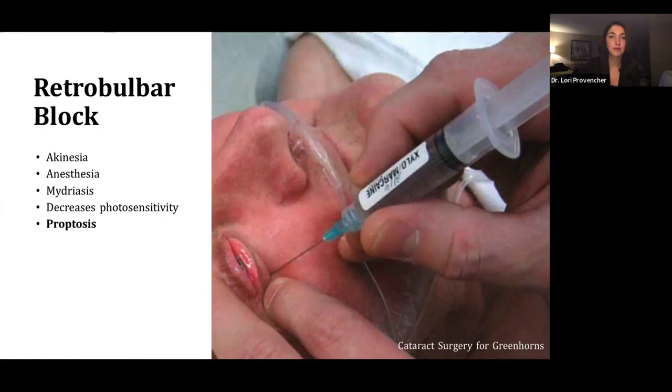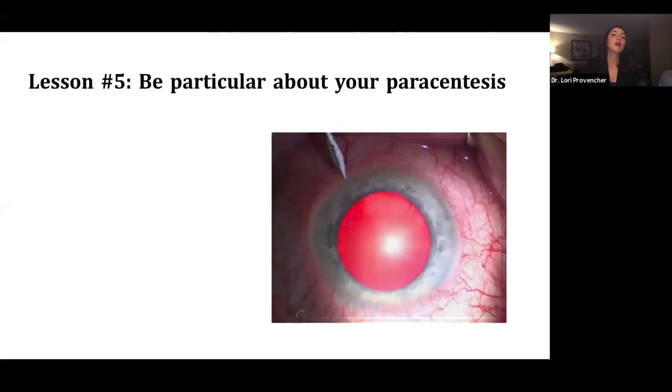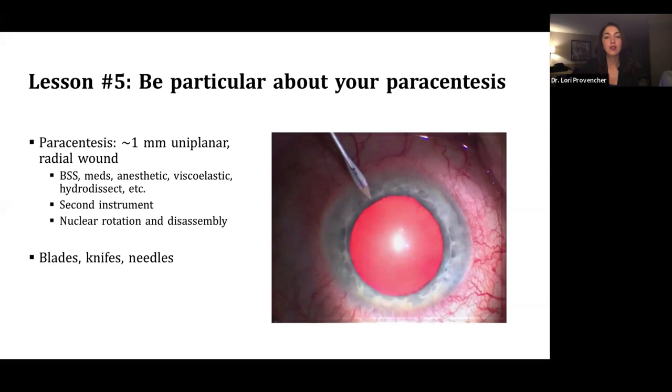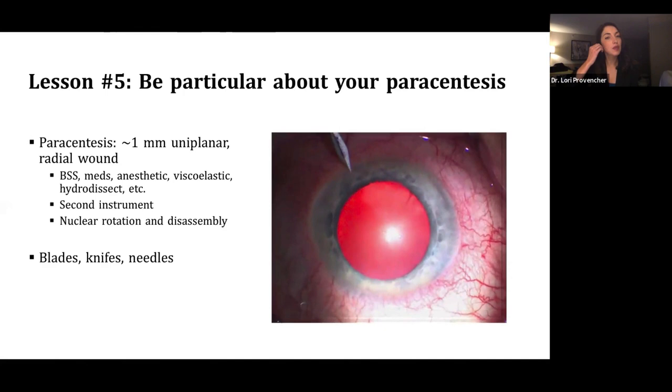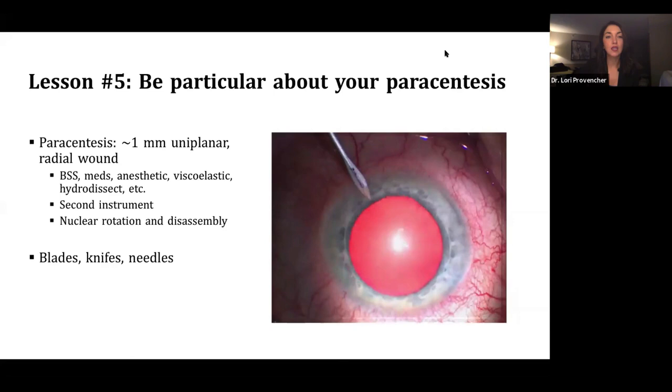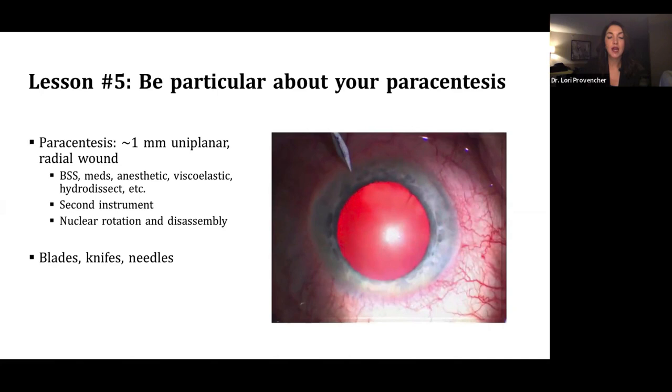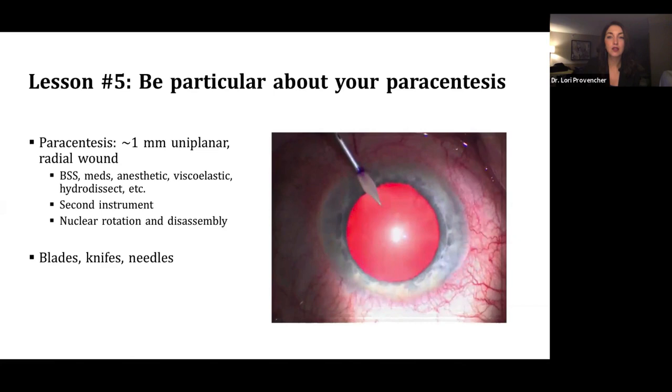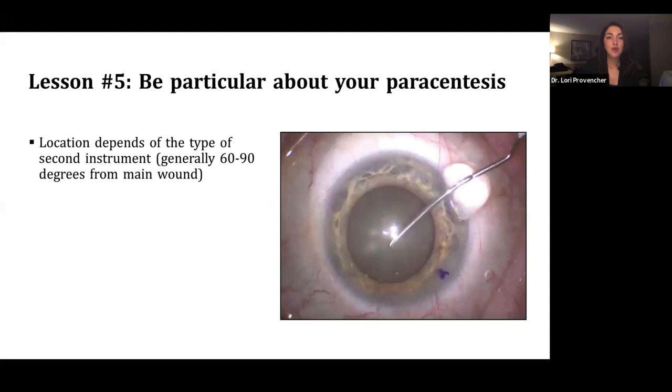We'll move a little further up the pyramid here. Paracentesis. So be very particular about your paracentesis. Just to review, it's a one-millimeter uniplanar radial wound, and you're going to be using it for injecting a lot of things like BSS, your medications. And your second instrument is going to be going in and out of this wound a lot, so you need it to be proper. Location is really important, and it depends on the type of second instrument you're going to be using. But generally, the second instrument should be positioned about 60 to 90 degrees away from the main wound.